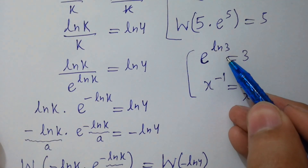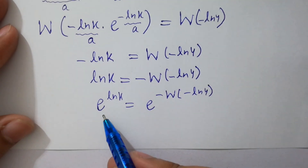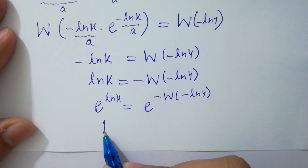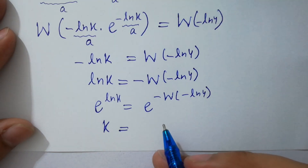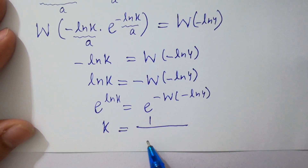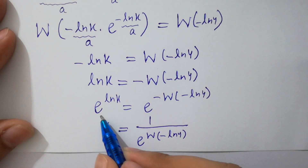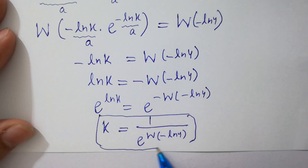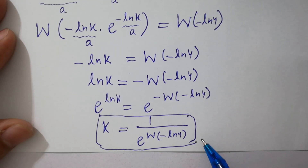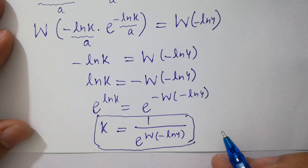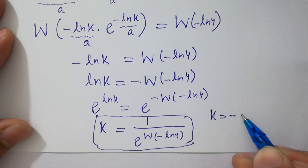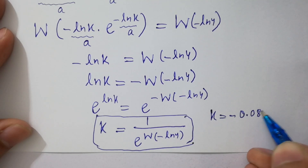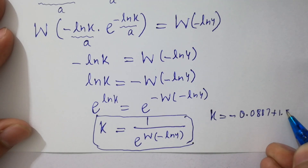Since e to the power ln k equals k, so here k equals e to the power minus W of minus ln 4, which equals 1 over e to the power W of minus ln 4. This is our final answer. This is not a real solution — this is a complex solution. On the internet, the value of k is approximately minus 0.0887 plus 1.5 root i.